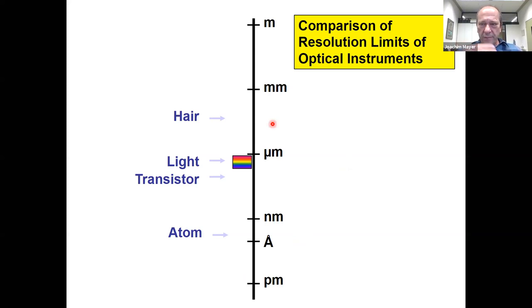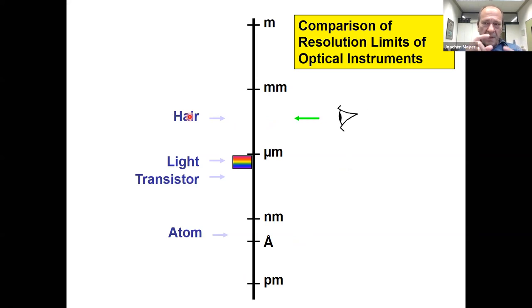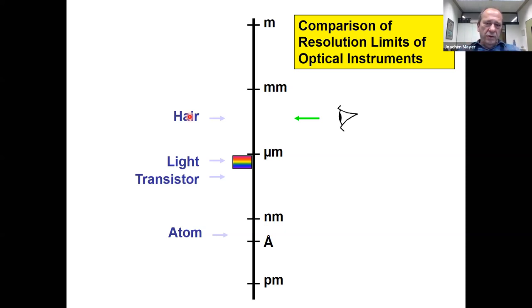If we talk about resolution limits of optical instruments, the first question is: what is the resolution of the human eye? A human hair has a diameter of about 50 to 60 micrometers. You can see the hair as a single line, but you cannot resolve two points perpendicular to it. So the resolution of the human eye is about 60 to 100 micrometers. To see more detail, you need microscopes.